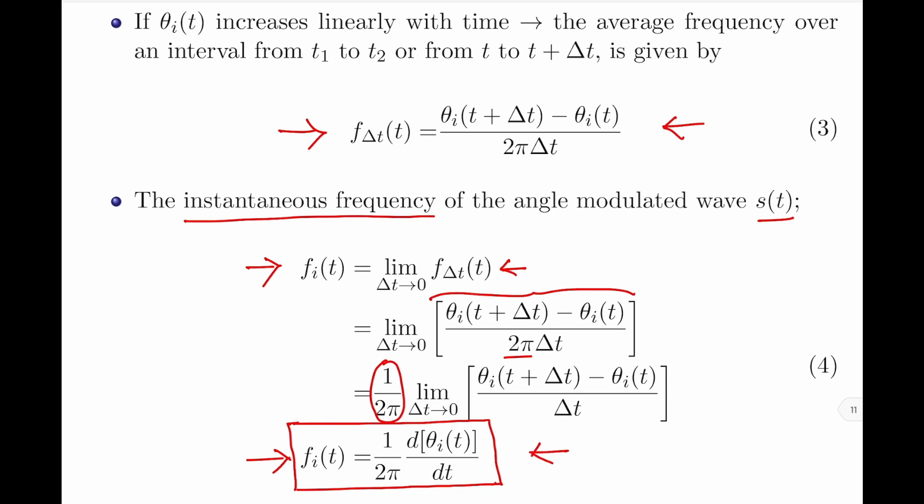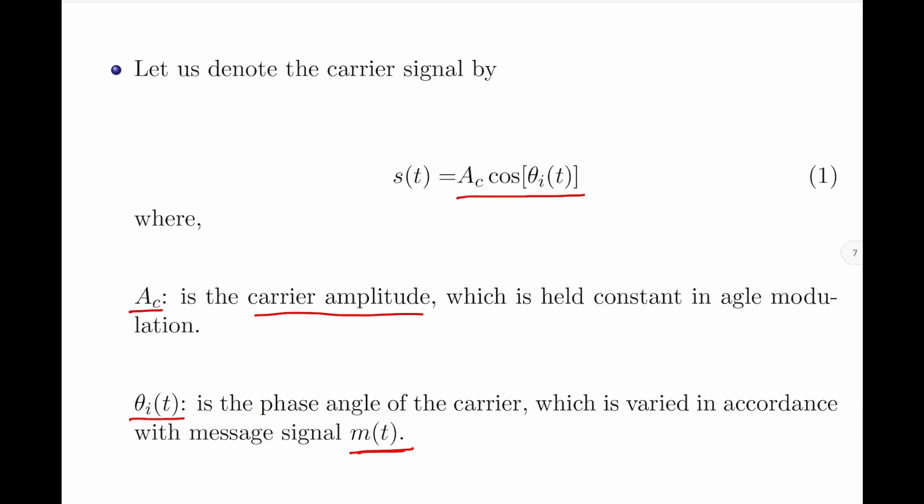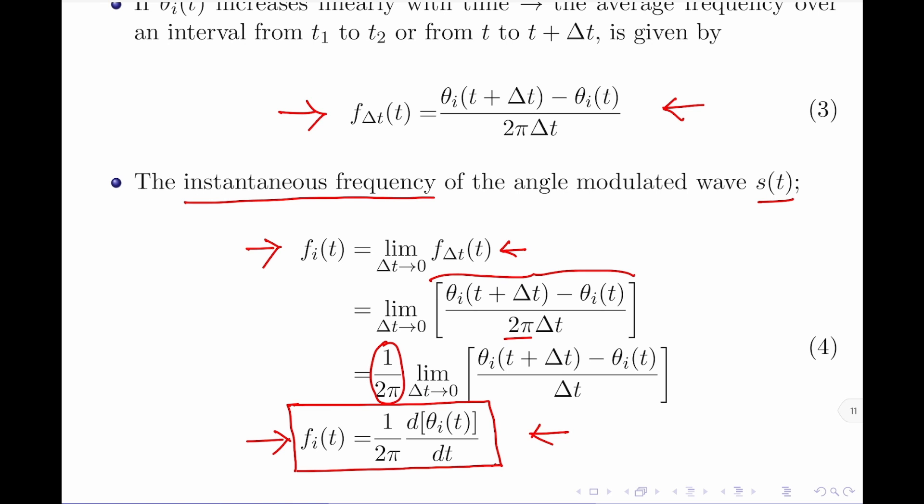From this equation, we find that the instantaneous frequency fᵢ(t) of the angle modulated wave is a function of the angle of the carrier signal θᵢ(t). Therefore, coming back to equation 1, the angle modulated signal S(t) can be assumed as a rotating phasor of length AC and angle θᵢ(t). Since this is a phasor, we must consider its angular velocity, which is d/dt of θᵢ(t), measured in radians per second.